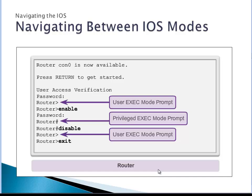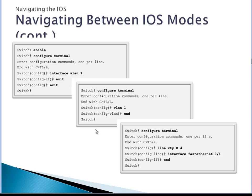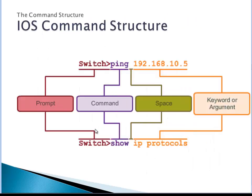Just so you don't forget: 'enable' takes you from user mode to privileged mode, and 'disable' takes you back from privileged mode to user exec mode. Now, IOS command structure: first you have the prompt — that sign in the terminal telling you what mode you're in. Then you have the command, a space, and then the keyword or argument. That's the structure of how commands are run.